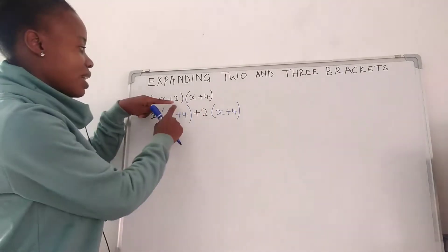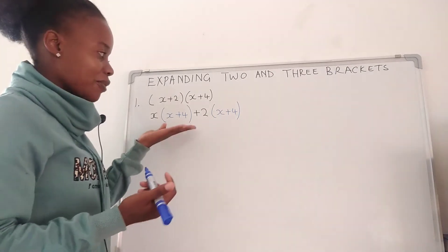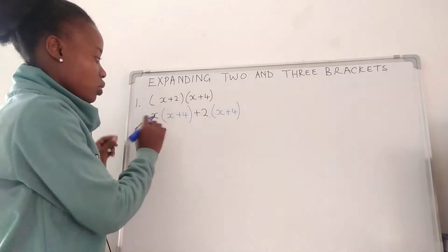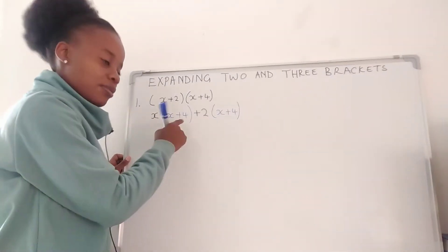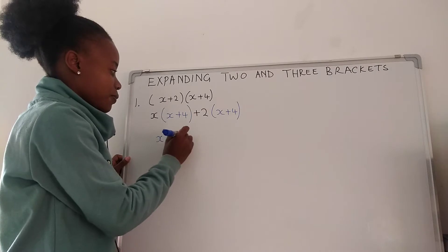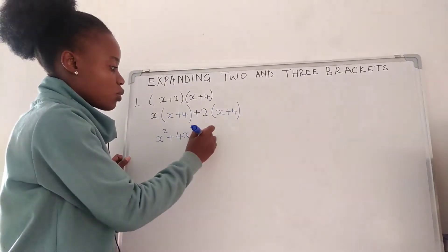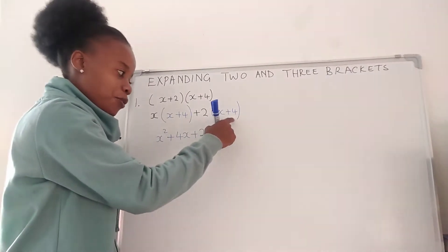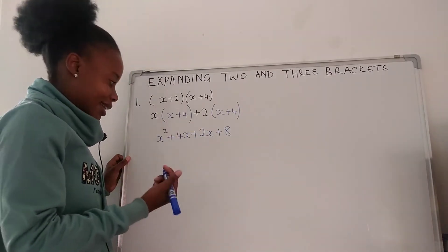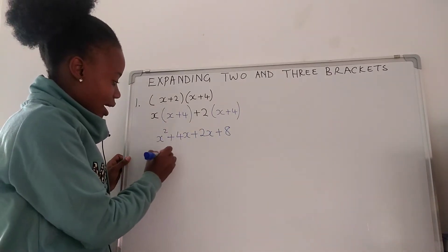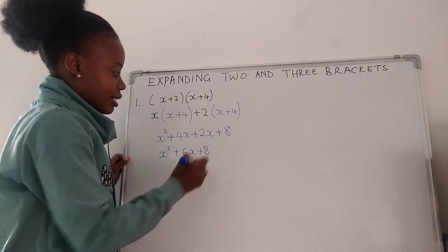You can see that we multiplied x with everything on this side, and we multiply 2 with everything on this side. After this step we remove brackets: x times x is x squared, x times 4 is 4x, plus 2 times x which is 2x, 2 times 4 which is 8. After this step we collect like terms, so we're going to have x squared plus 6x plus 8. This is how to expand two brackets.